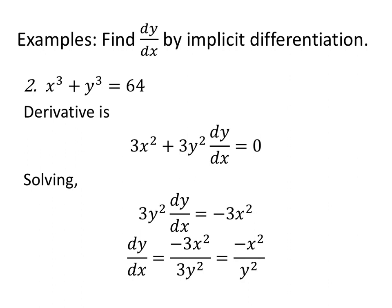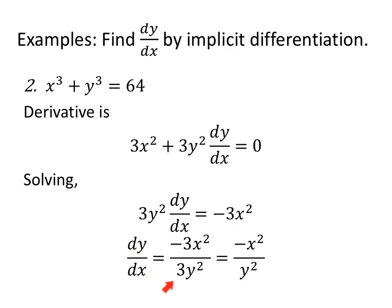Another example: x cubed plus y cubed equals 64. The derivative of x cubed is 3x squared. For y cubed, remember y is a function of x, so the derivative is 3y squared times the derivative of the inside — dy/dx. We have no idea what y is explicitly, so we write the generic derivative. The derivative of 64 is 0. Solving for dy/dx, subtract 3x squared, divide both sides by 3y squared, and simplify.